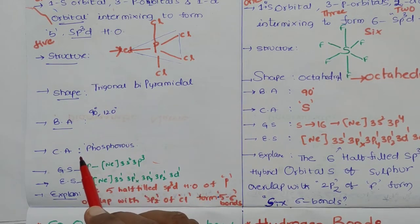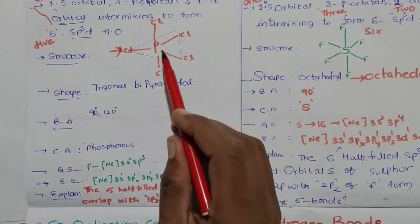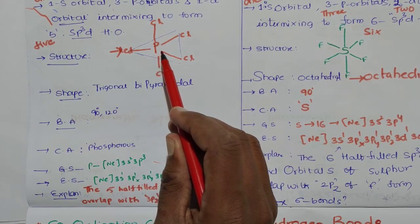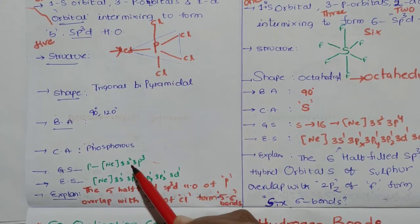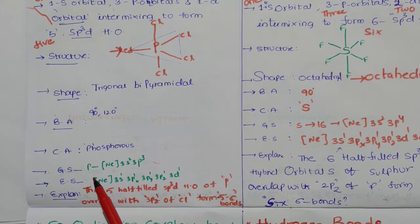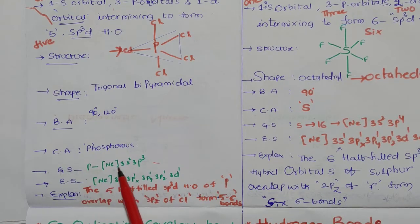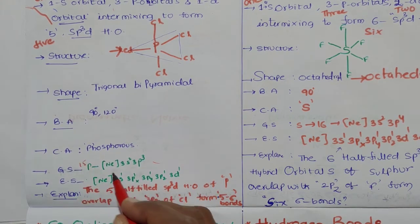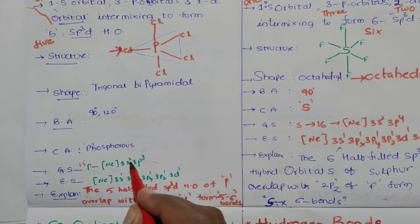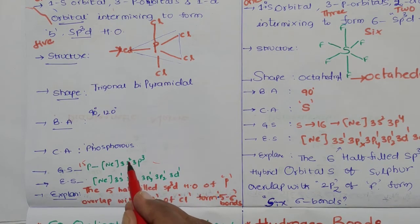Next, central atom is phosphorus. Phosphorus is providing the hybrid orbitals. Central atom is phosphorus. Phosphorus has atomic number 15, which is 10 plus 5. After nitrogen comes phosphorus. Ground state electronic configuration is 3s² 3p³.